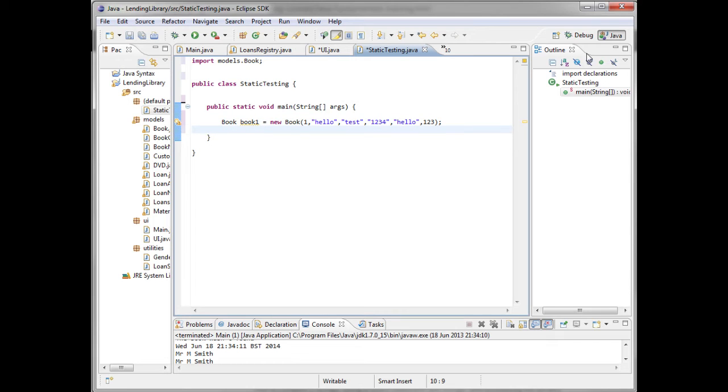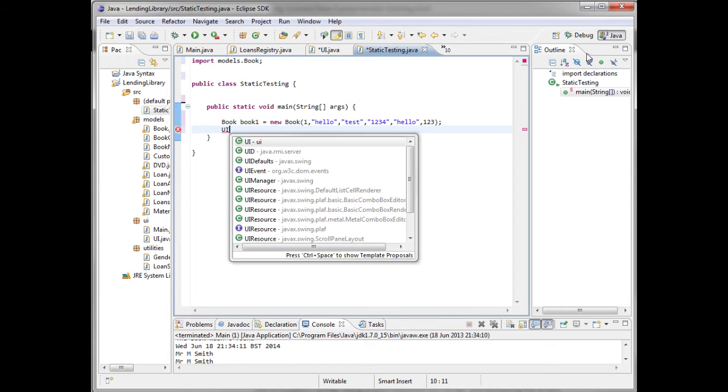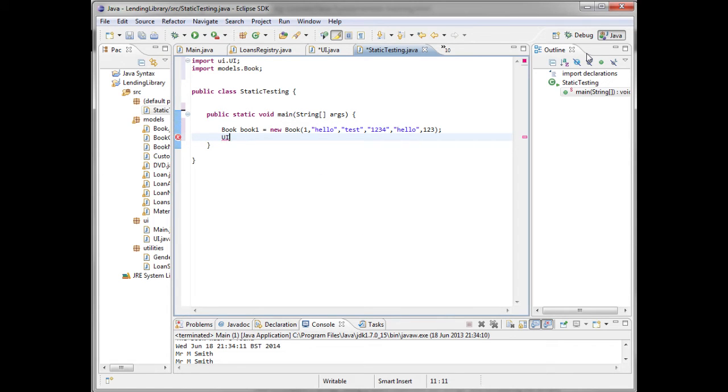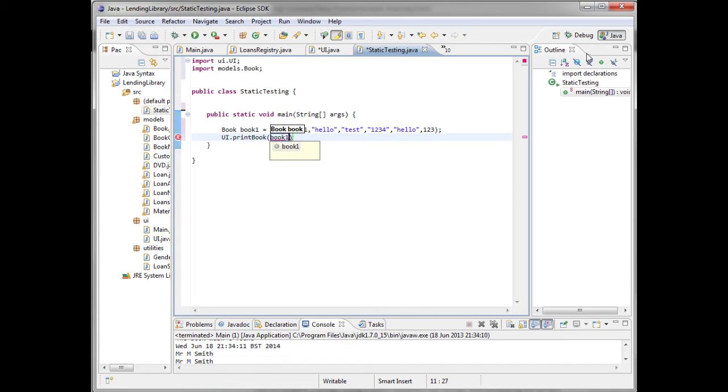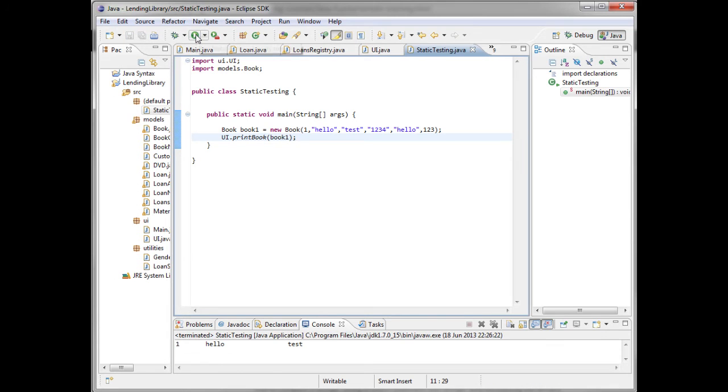Now I'm going to call the print book method of the UI class. But because this is now a static method, I don't need to instantiate UI. All I need to do is UI in capitals, which is the name of my class dot. And as you can see, we've got our print book method and I'll pass in book one I've just created. Let's save and run this. Okay, so we've now shown that we can create a static method and call it without having to instantiate the class.